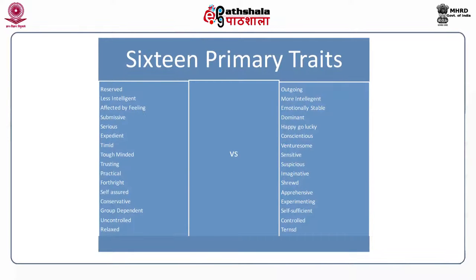Sixteen factors determine the primary traits: whether a person is reserved or outgoing, less intelligent or more intelligent, affected by feelings or emotionally stable, submissive or dominant, serious or happy-go-lucky, expedient or conscientious, timid or venturesome, tough-minded or sensitive, trusting or suspicious, practical or imaginative, forthright or shrewd, self-assured or apprehensive, conservative or experimenting, group-dependent or self-sufficient, uncontrolled or controlled, and relaxed or tensed.